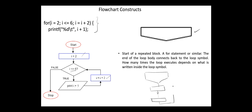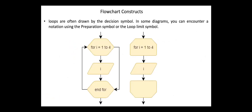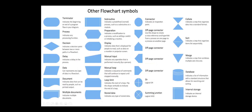How many times the loop executes depends on what is written inside the loop symbol. In some diagrams, we can encounter a preparation symbol or the loop limit symbol. In addition to the described basic symbols used in most flowcharts, there are several other symbols — for example, a symbol used for a subroutine, symbols used as off-page connectors, a symbol for sort, one for merge, database, internal storage, etc.